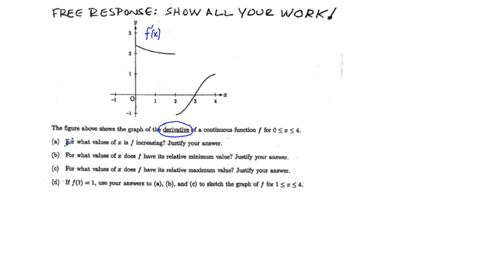Now we look at what is being asked. Part A: for what values of x is f increasing — not f prime, but f. Part B: for what values of x does f have a relative minimum value? Justify your answer. Part C: for what values of x does f have its relative maximum value? Justify your answer. Part D will be a graph sketching problem based on what we learn in parts A, B, and C.